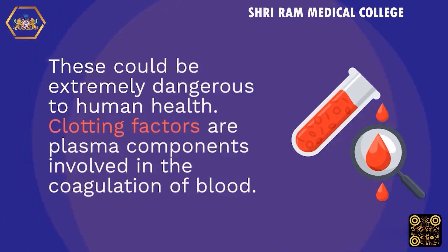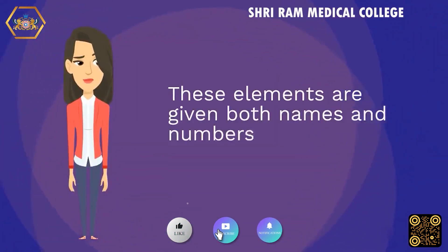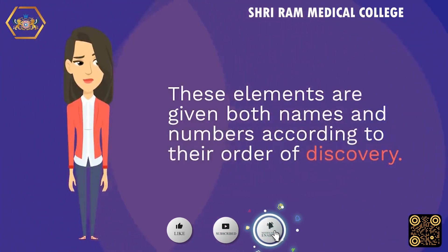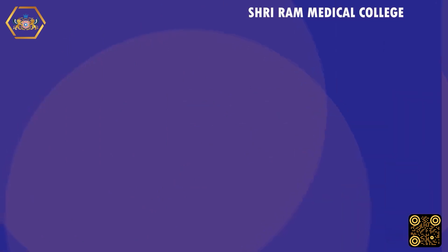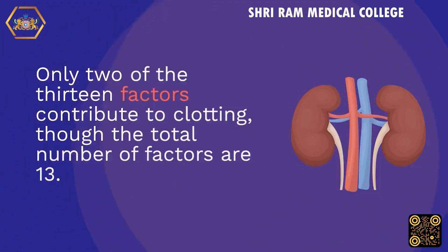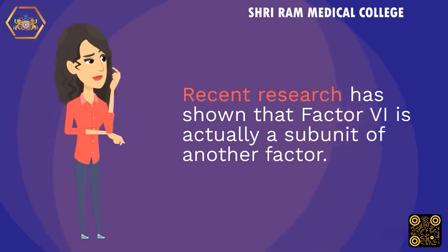Clotting factors are plasma components involved in the coagulation of blood. These elements are given both names and numbers according to their order of discovery. Only two of the 13 factors contribute to clotting, though the total number of factors is 13. Recent research has shown that Factor VI is actually a subunit of another factor.